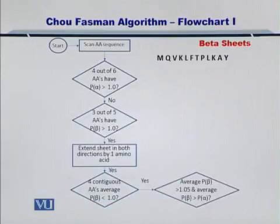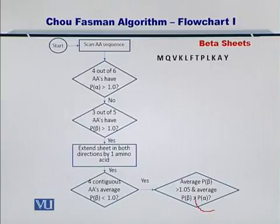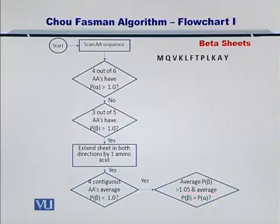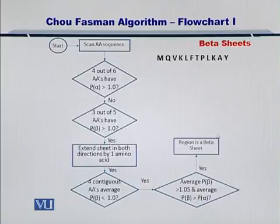In that case, you calculate the propensity for alpha helix for those amino acids as well, which you have already calculated, and you compare them. If the propensity for forming a beta sheet is still greater than the propensity for forming an alpha helix, then the region is labeled permanently as a beta sheet.